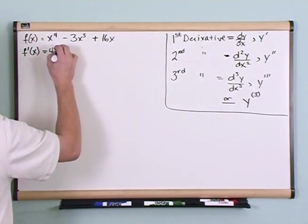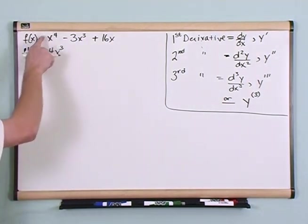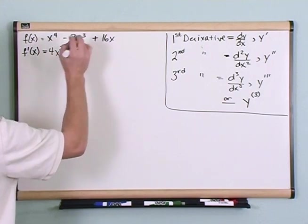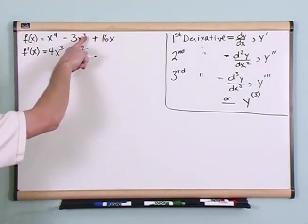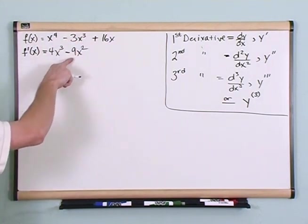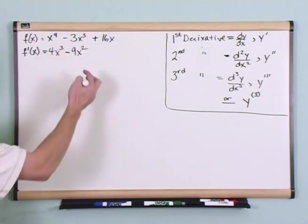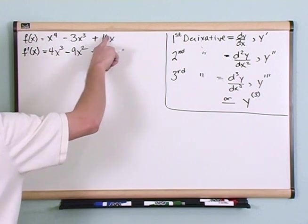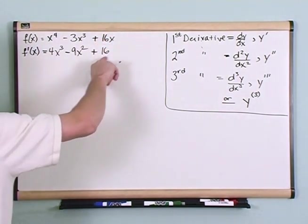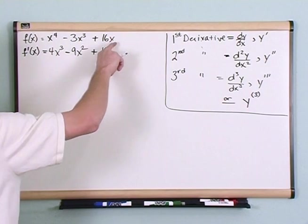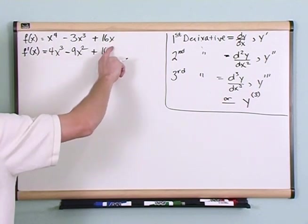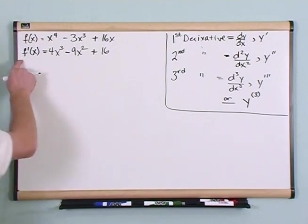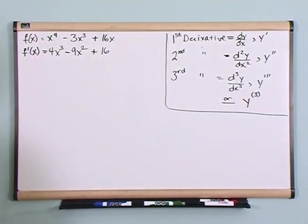The first derivative is going to be 4x³ using our exponent rule — the 4 comes out and you have 3 in the exponent — minus 9x². The reason it's 9 is that 3 comes out of the exponent: 3 times 3 is 9, and the exponent is 3 minus 1. Then over here you're left with 16, because 16 times 1 is 16, and x to the 0 power drops away. So this is the first derivative of f(x).